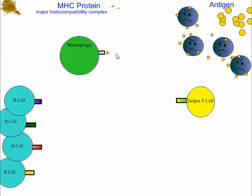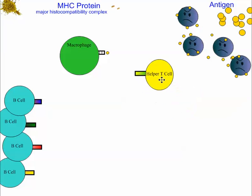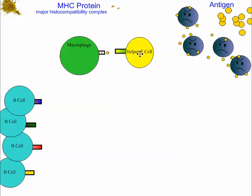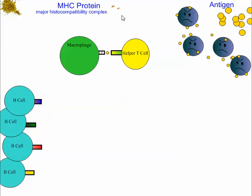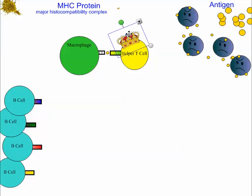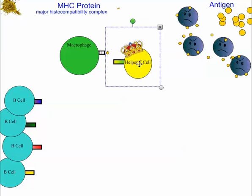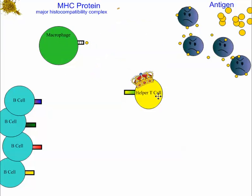MHC stands for the major histocompatibility complex. What happens is a helper T cell can actually bind to a macrophage that's presenting an antigen. When that binding occurs, a signal gets passed from the macrophage to the helper T cell, and the helper T cell becomes activated.